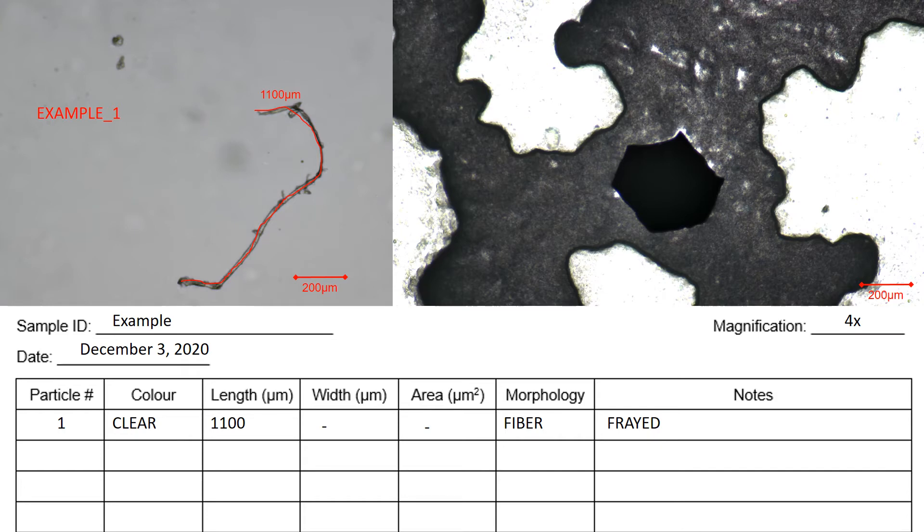So onto the second example. Here we have a glitter fragment from nail polish. So you're going to want to name that. Again I use the same root name example, and it's particle number two. So you put two next to the example. And then you go ahead and record it in your table. Particle number two. And the color is black.